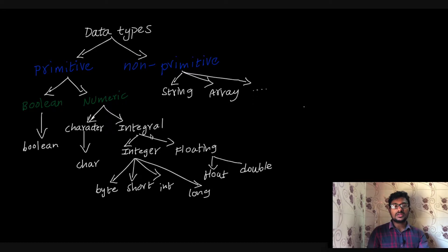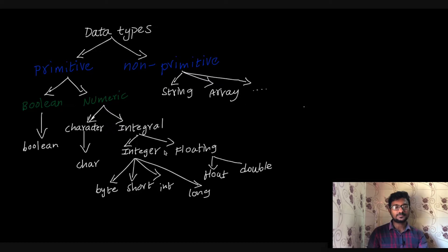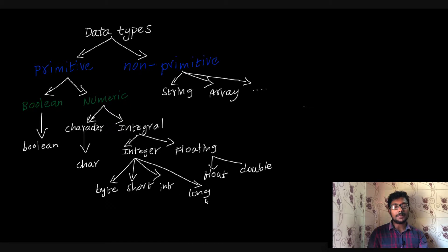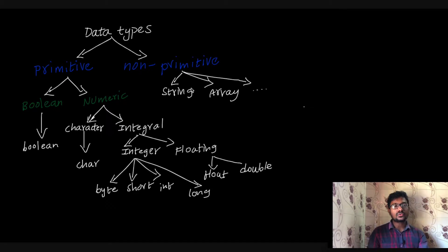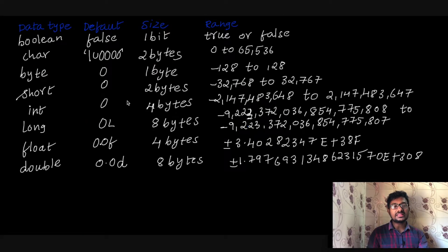The character is a character data type, and you can spell it as char. The integral has two categories: integer and floating. The integer category has four primitive data types: byte, short, int, and long. The floating data types are two types: float and double. So in detail, this is the classification.